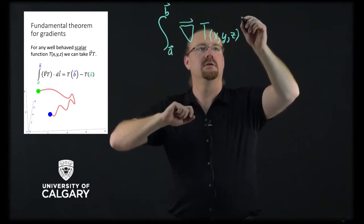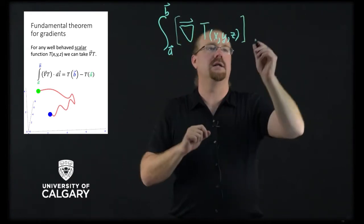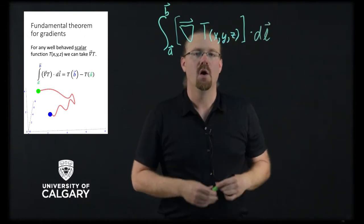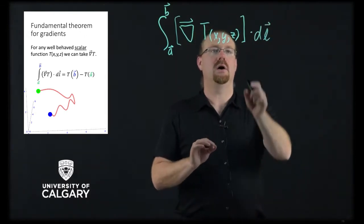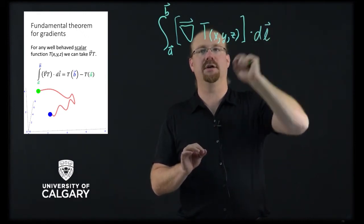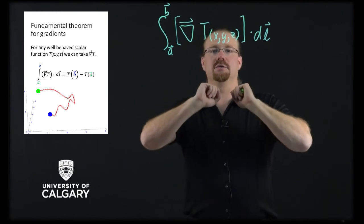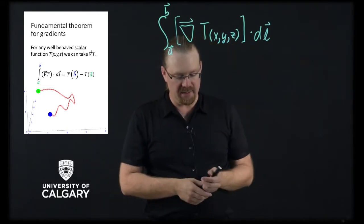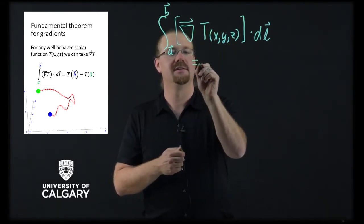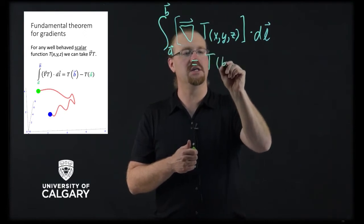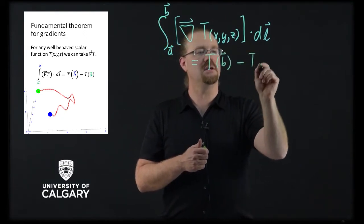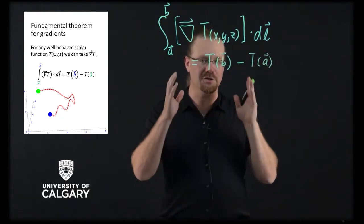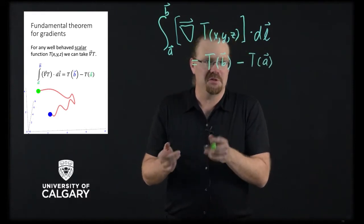Because this is a vector, we'll go ahead and dot that with a dl. What we're doing is we're adding up all of the little dot products between this dl vector and the gradient of this scalar field. When we add all of those things together, what we can say is that this is equal to T evaluated at b minus T evaluated at a. It looks just like the fundamental theorem of calculus.